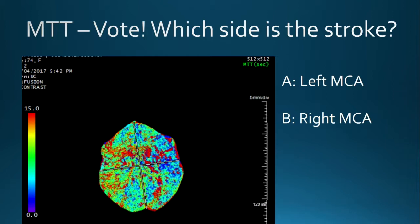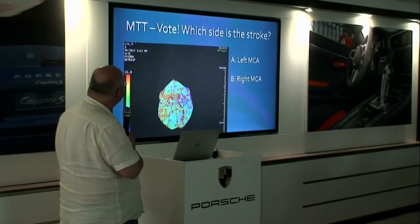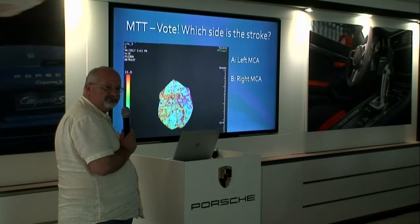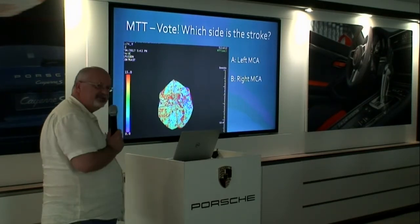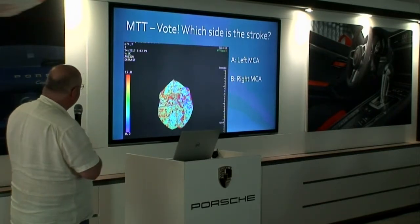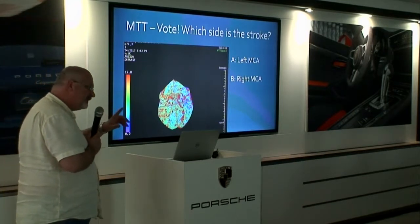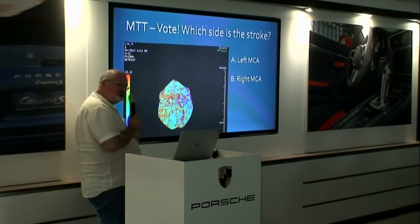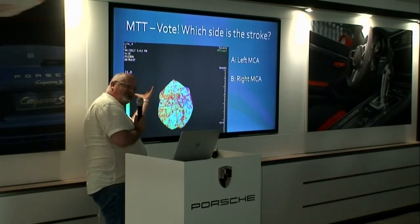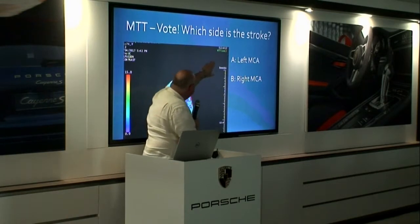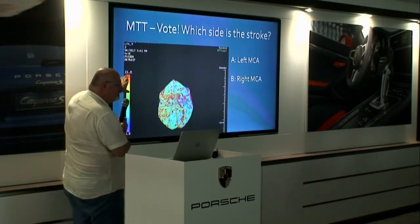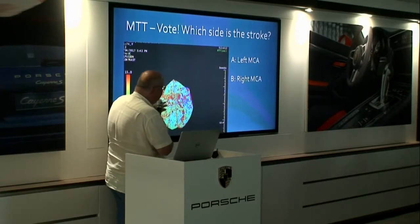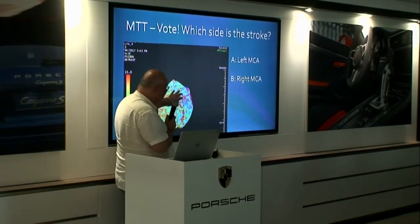Based on what I just told you, what do you think — where is the stroke? Is it left or right? Now this is a trick. The color coding — we choose it, and if it's reversed, it changes everything. This is our mean transit time: 15 seconds is very slow and zero is very fast. So wherever it's purple and blue it's good; wherever it's red and yellow it's bad. Don't fool yourself — this is actually a right MCA stroke.